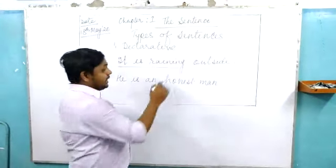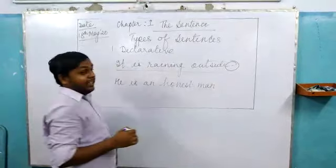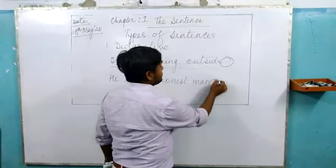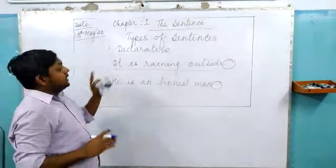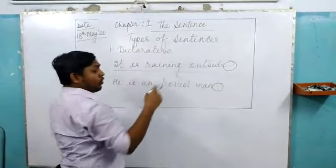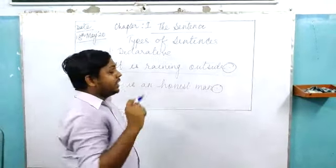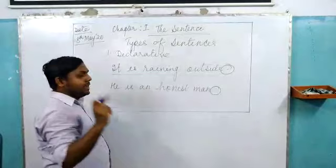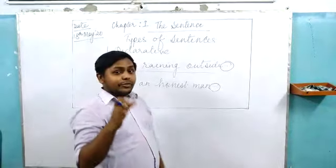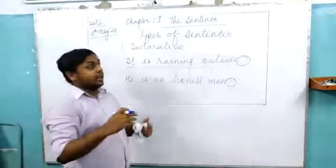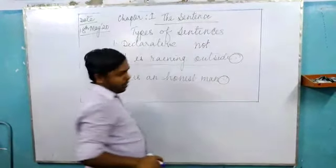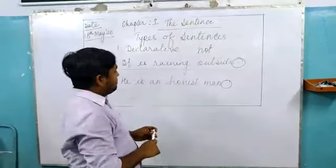For example, 'It is raining outside' — it is a declaration or a statement. Or if I say 'He is an honest man' — it is also a statement, meaning someone is declaring or stating something. These sentences are always ended with a full stop. This is also called an assertive sentence. These sentences are again divided into two types: positive sentence and negative sentence. In negative sentences, we use 'not', 'doesn't', 'do not'.